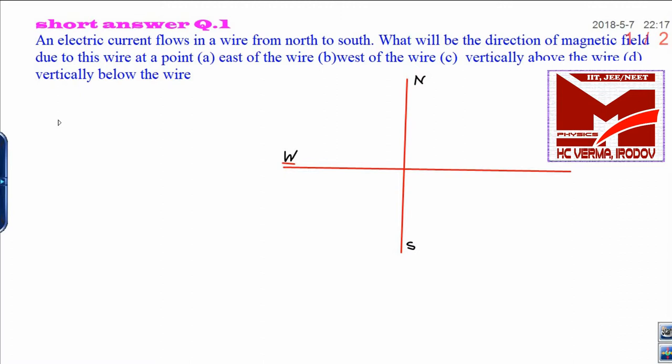An electric current flows in a wire from north to south. Let this be the direction of flow of current, that is from north to south. Let this be point I. What will be the direction of magnetic field due to this wire at a point (a) east of the wire?